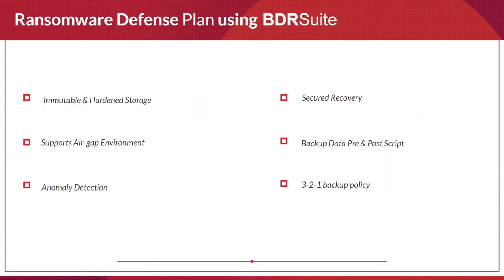The 3-2-1 backup policy means three copies of data stored in two different storage mediums with one off-site copy. With object storage now supported, having an off-site copy is mandatory even for data stored in object storage. The pre- and post-backup script has been added as discussed. The air-gapped environment support provides offline licensing — the backup server doesn't need internet connectivity, operating on internal LAN only.